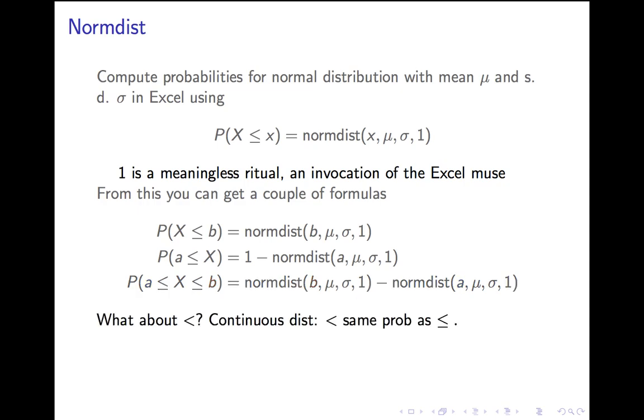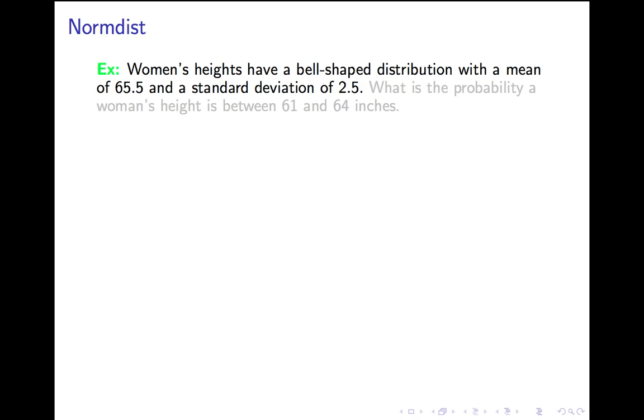What about the probability that X is less than B? That's the same as the probability X is less than or equal to B in a continuous distribution, because the probability being exactly B is 0. So, we don't have to worry about that distinction. Alright, what do these probabilities look like in practice? Let's do some examples.